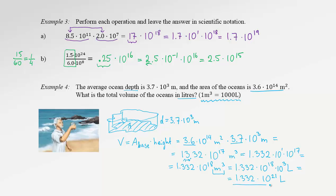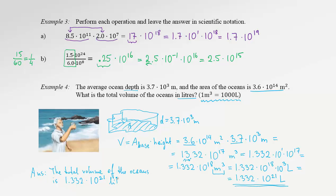The total volume of the oceans is 1.332 times 10 to the 21 liters. It's hard to imagine how large this number is.